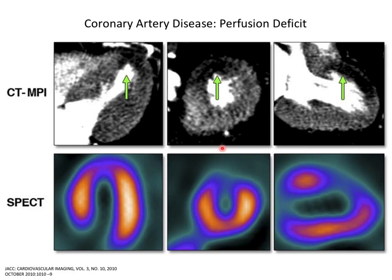Sometimes it's absolutely clear there's a perfusion deficit just from the signal intensity difference — normal or near-normal myocardium versus a really dark spot from a heavily stenosed vessel with no perfusion. That was CT. These next images are single photon emission computed tomography — SPECT.